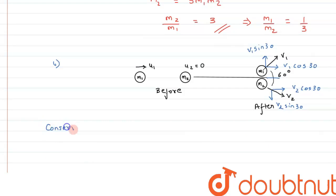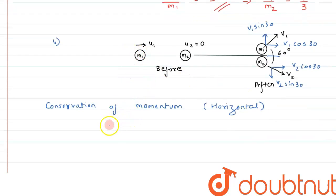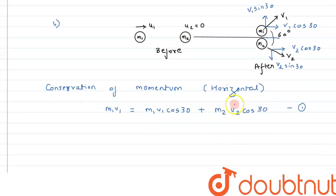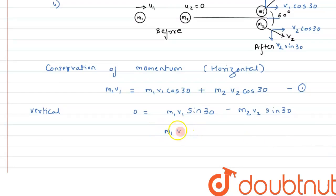Applying conservation of linear momentum along the horizontal direction: initial momentum is m1*u1 (m2 is at rest), which equals m1*v1*cos30 + m2*v2*cos30. This is equation number one. For the vertical direction, initial momentum is zero, so: 0 = m1*v1*sin30 - m2*v2*sin30, which simplifies to m1*v1 = m2*v2. This is equation number two.